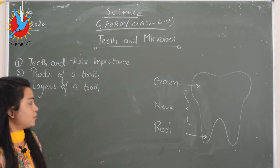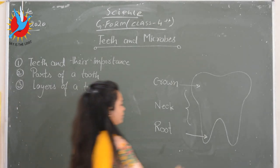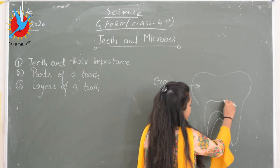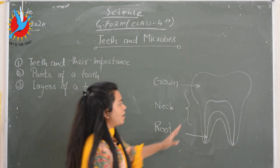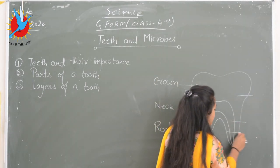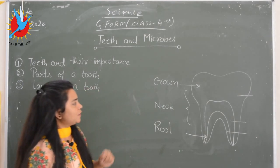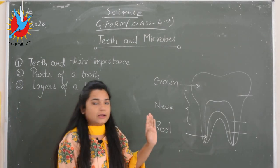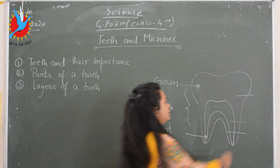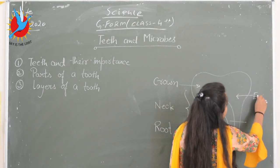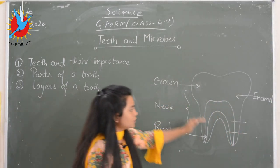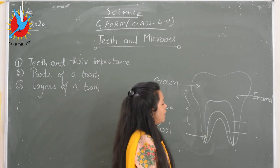Now the third topic: layers of a tooth. As you can see in the diagram I have drawn, there are three different layers. The first layer is the strongest and hardest layer, known as enamel. This is the outermost layer and it protects the innermost layers of the teeth.